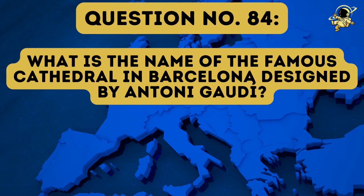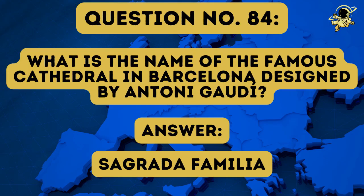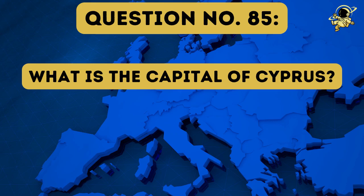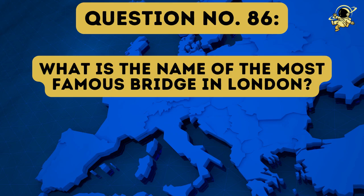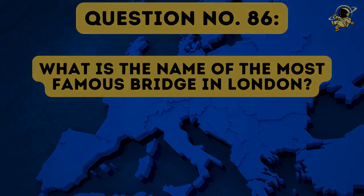Question number eighty-four: What is the name of the famous cathedral in Barcelona designed by Antoni Gaudí? And the answer to question number eighty-four is the Sagrada Família. Question number eighty-five: What is the capital of Cyprus? The answer to question number eighty-five is Nicosia. Question number eighty-six: What is the name of the most famous bridge in London? And the answer to question number eighty-six is the Tower Bridge.